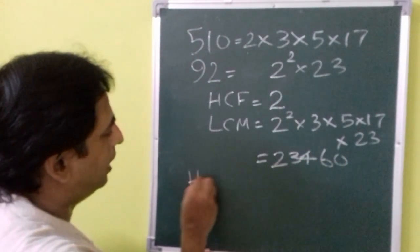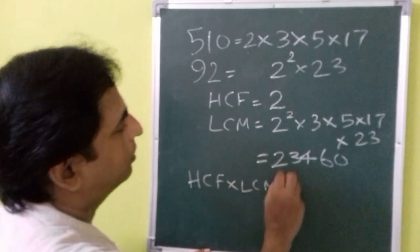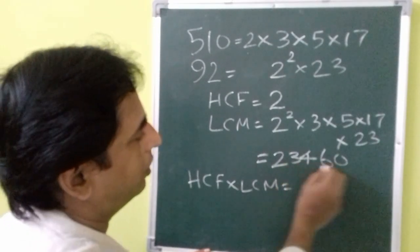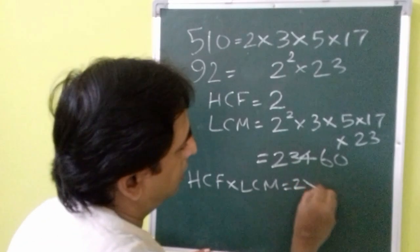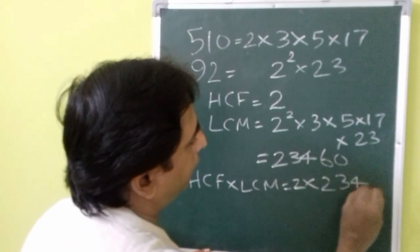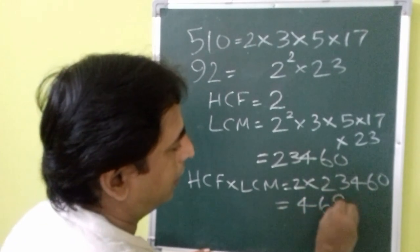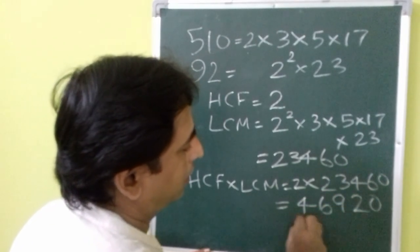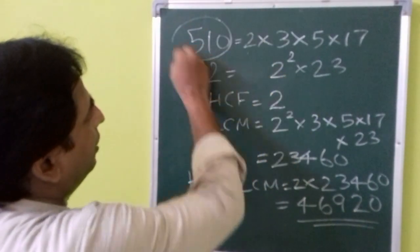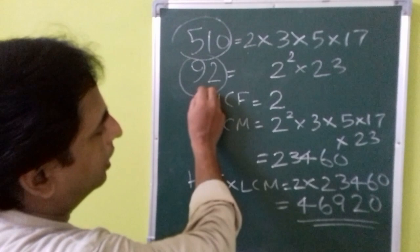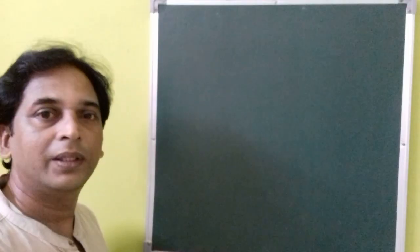And you need to verify whether HCF multiplied by LCM is equal to the product of the numbers. So 2 into 23,460 is equal to 46,920. So when you multiply the numbers 510 and 92 you will get the same numbers. You need to verify whether you are getting it or not.